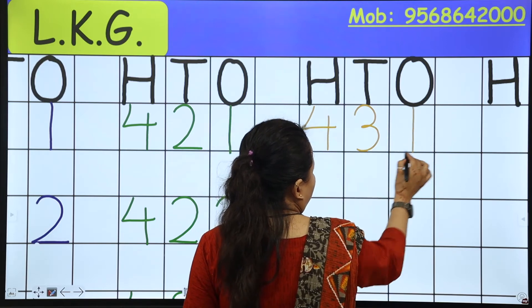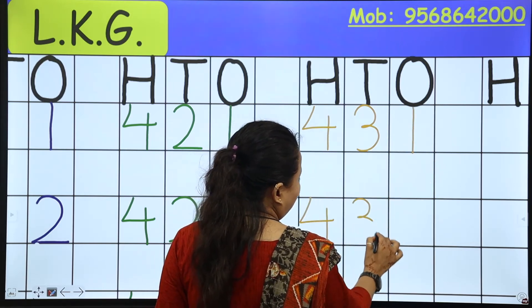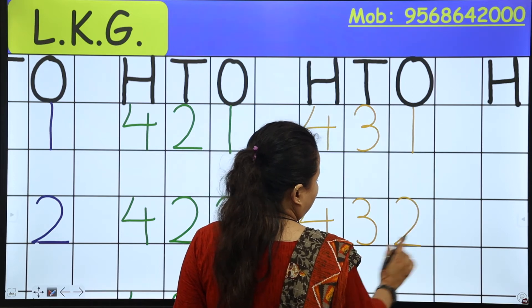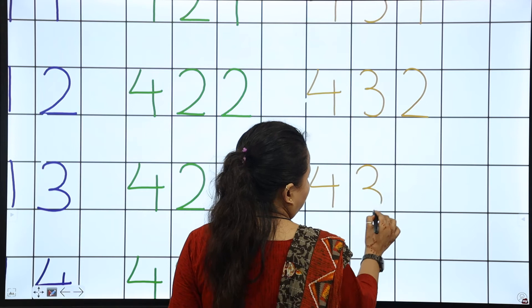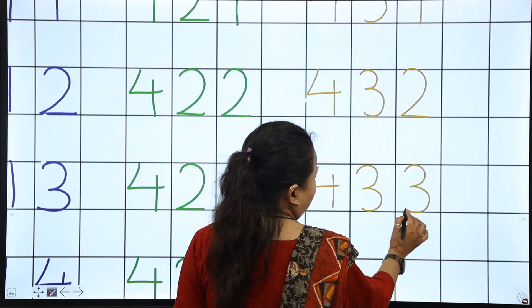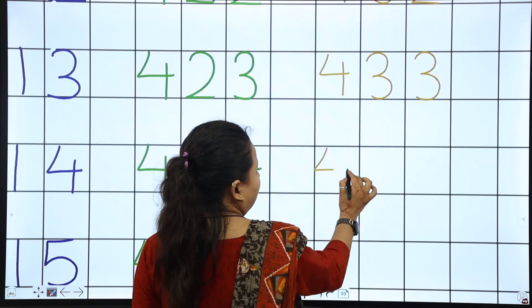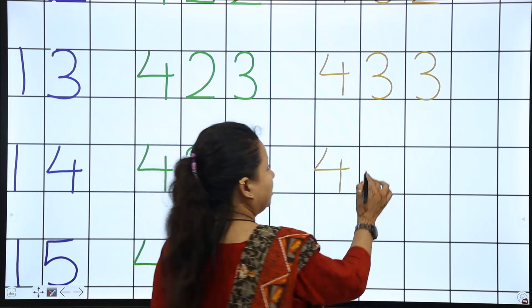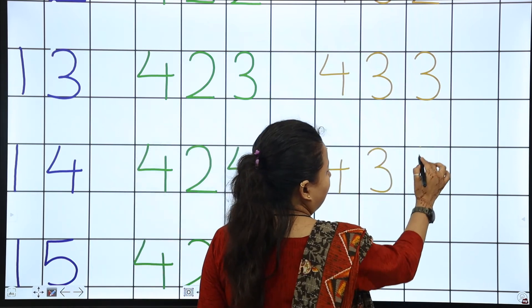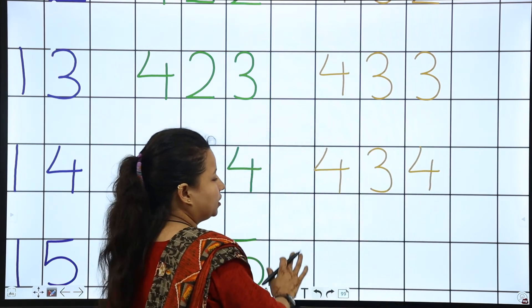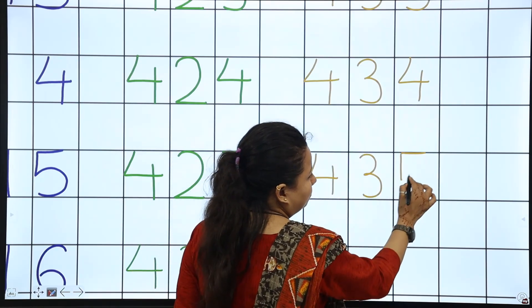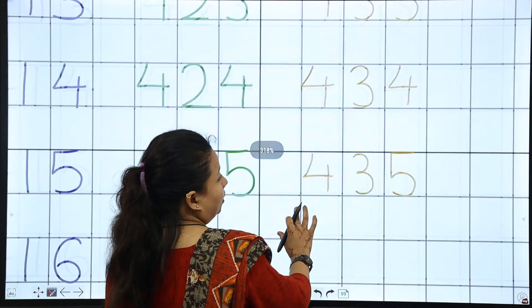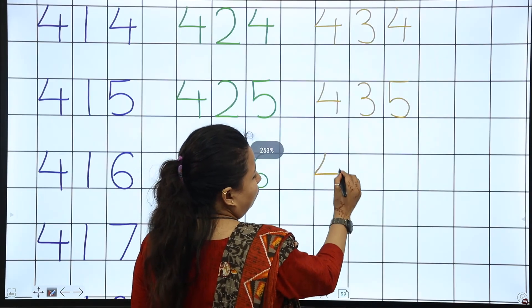431, 432, 433. Next is 434. Now next is 435.